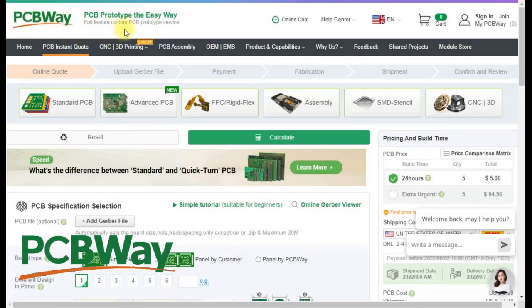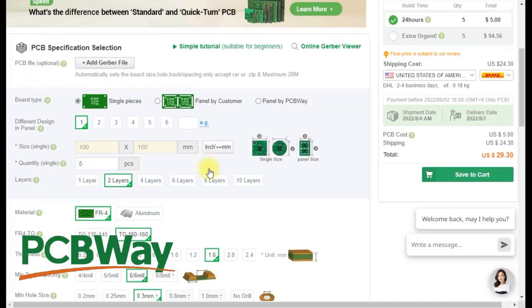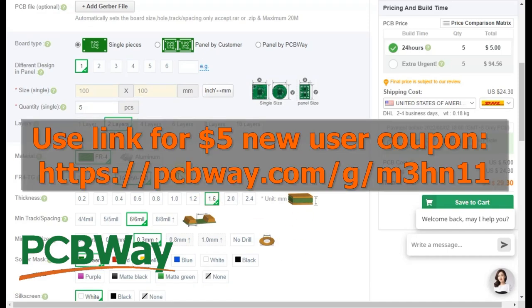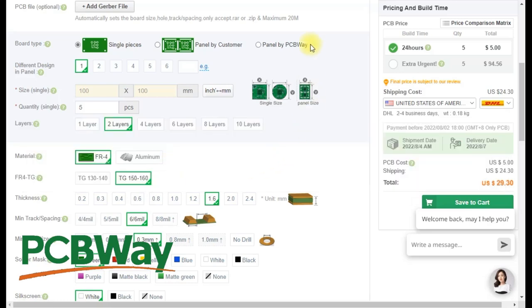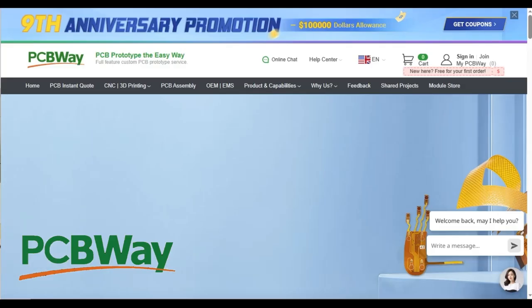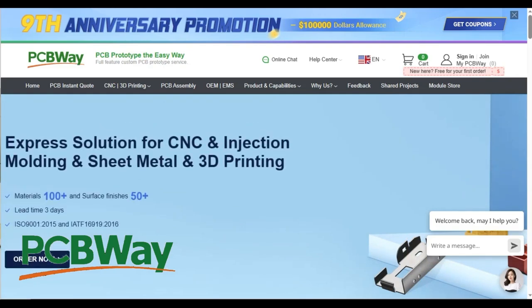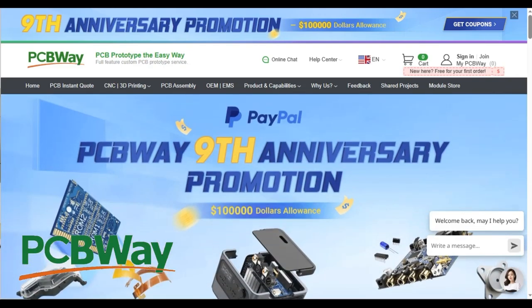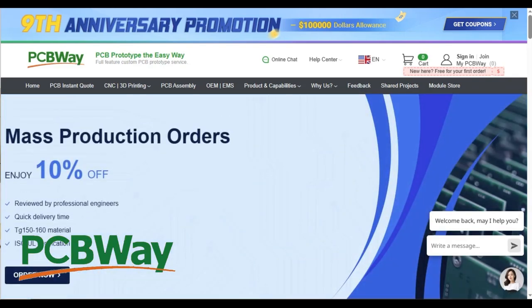Thanks to PCBWay for sponsoring this episode. They offer an excellent quick turn PCB prototyping service, which now has a free upgrade to the 150-160 temperature range. And this is PCBWay's ninth anniversary, and they're having lots of promotions, coupons, sales, etc. So go over to PCBWay and check them out.